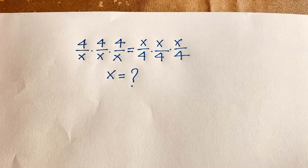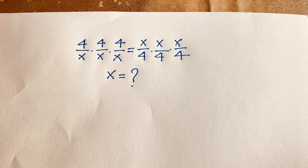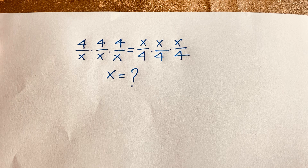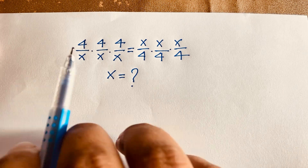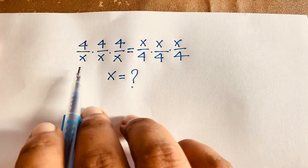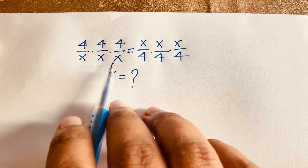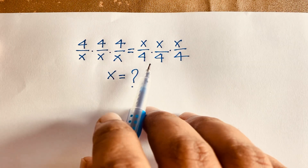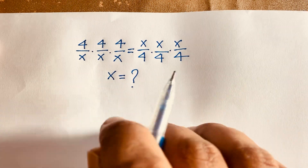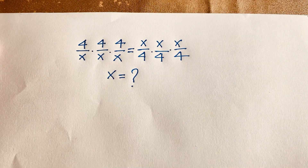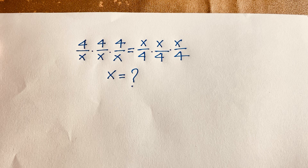Hello everyone. In this video, we'll solve this interesting math Olympiad question. The question is 4 to the 4 over x, times 4 to the 4 over x, times 4 to the 4 over x, is equal to x over 4 times x over 4 times x over 4. We'll find out what is the value of x.